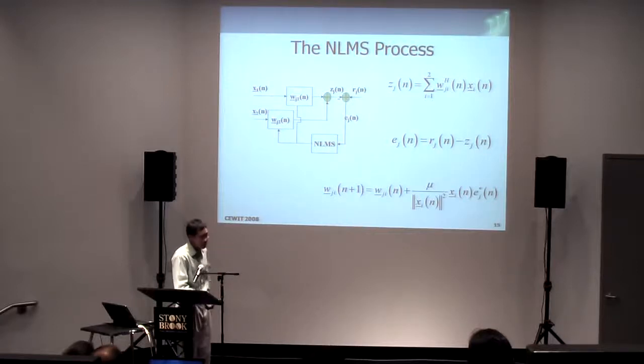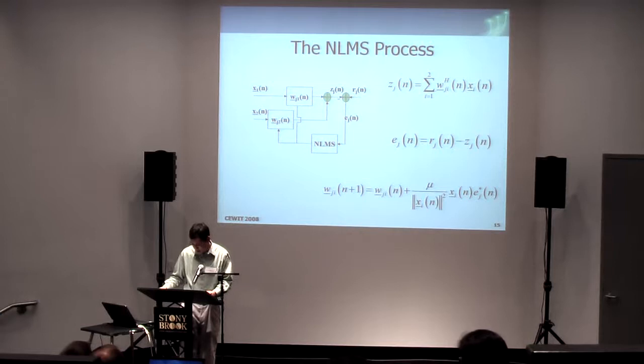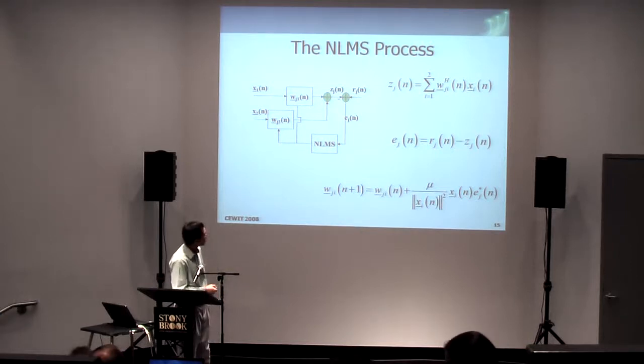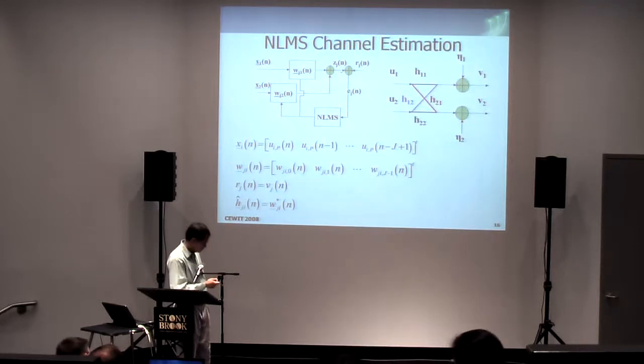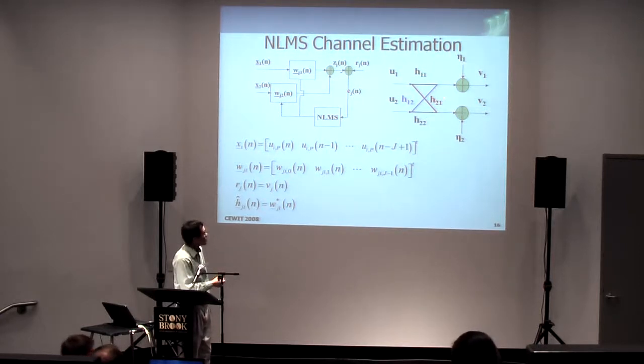Kind of adapt to the errors, adapt as the time goes on. So how do we use this NLMS process for channel estimation? Well, you can see it here. Again, we have the two transmit signals going through these four channels, adding noise so that we get two receive signals.